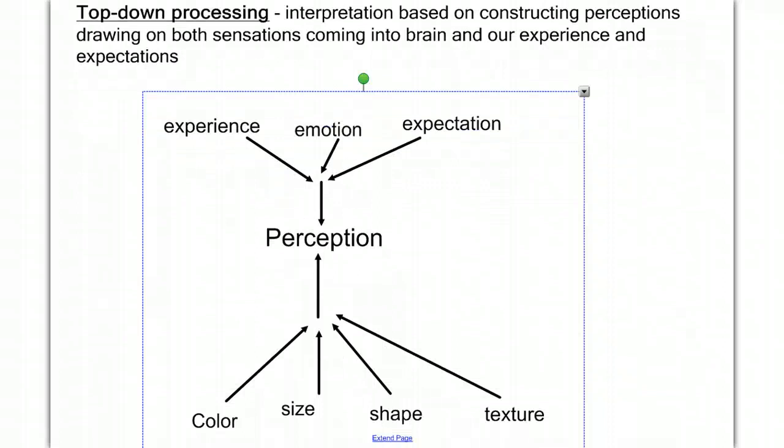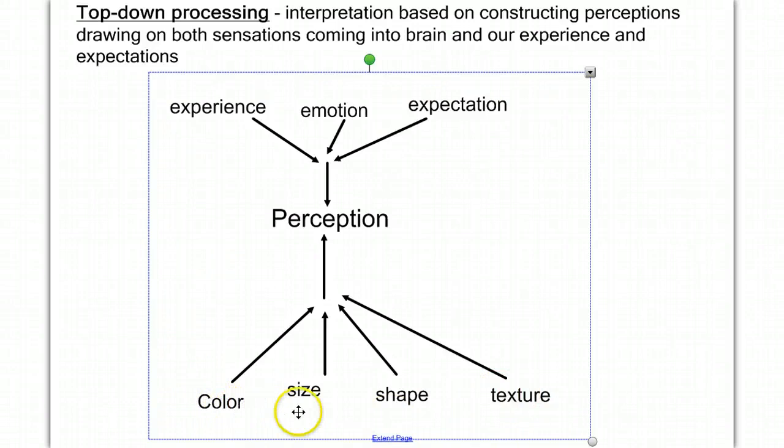I think this is better understood graphically. We have all different ideas coming, or components coming in, like the color, size, shape, texture, and those bits of information are coming in. But at the same time, we have prior experience, we have emotional state, and we have expectation coming down. And where they meet in the middle is perception.